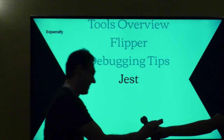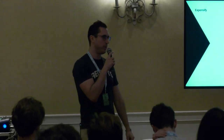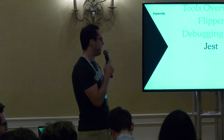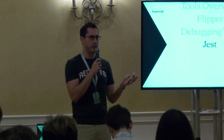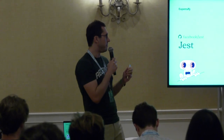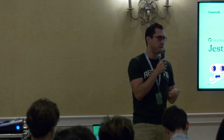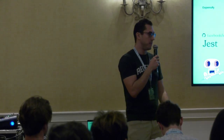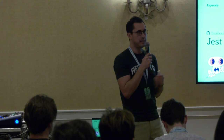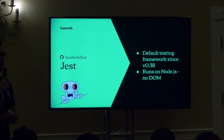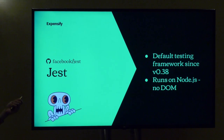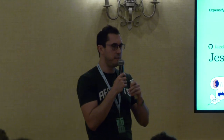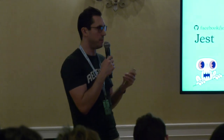Now, Jest. This is the part about automated tests. At Expensify we use Jest to write automated tests. Jest is the default testing framework that has shipped with React Native by default since version 0.38. It offers good tools to test business logic and critical components to make sure you're not breaking them every time you push something new. Jest runs on a Node.js environment, meaning there is no DOM, so we can't test user interactions like taps and clicks, but it's useful for JavaScript business logic.